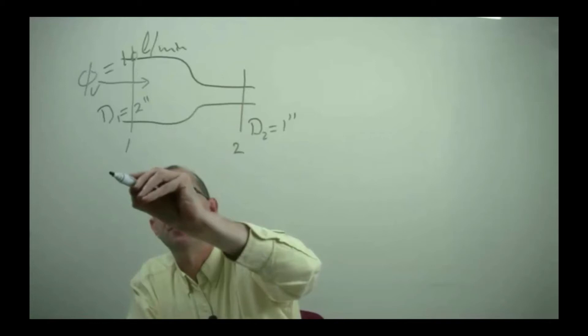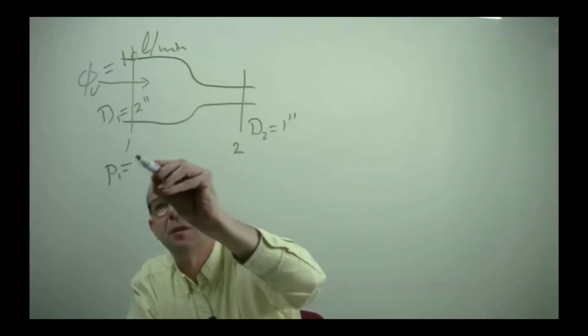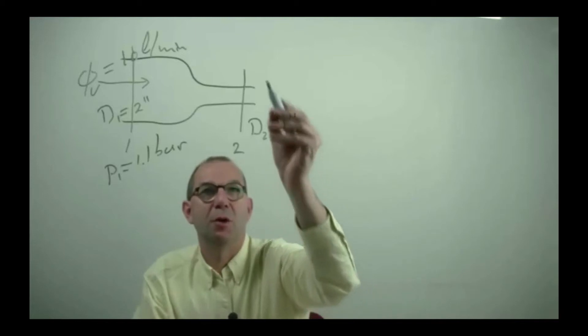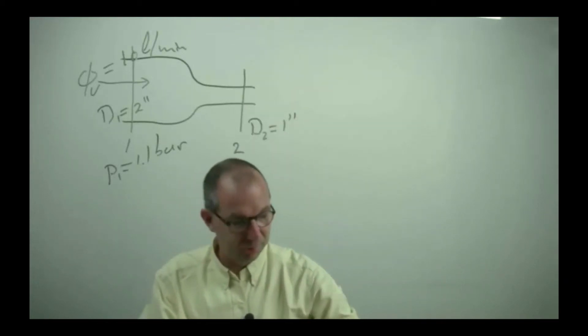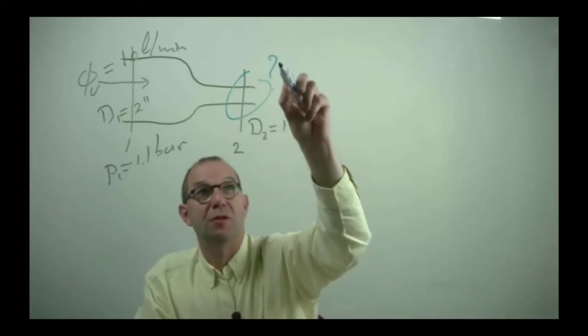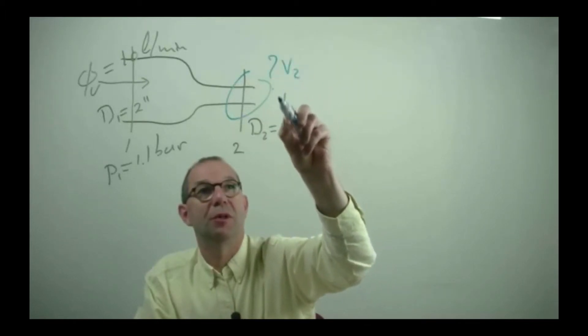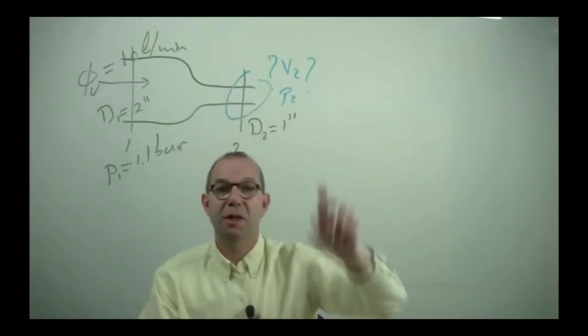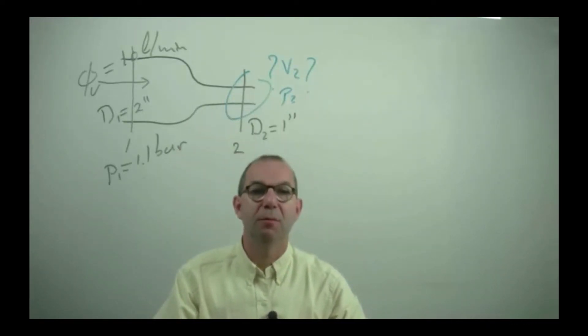And the pressure here 1.1 bar. And I would like to know what happens here. What is V2 and what is P2. This tube is laying horizontal on the table. So potential energy effects can be neglected. It's all at the same height.